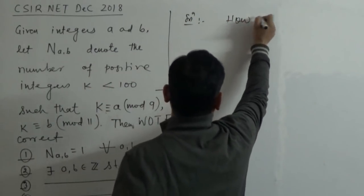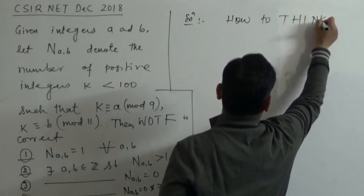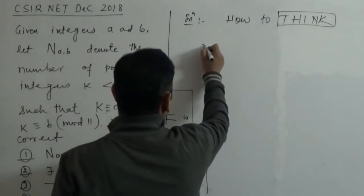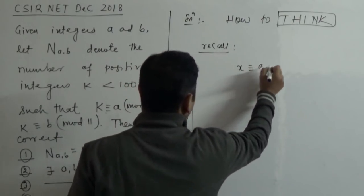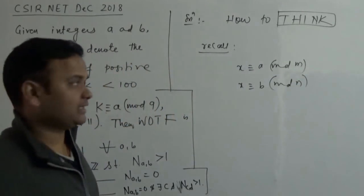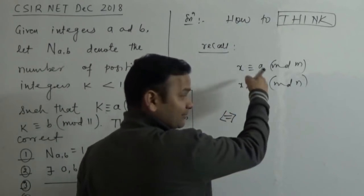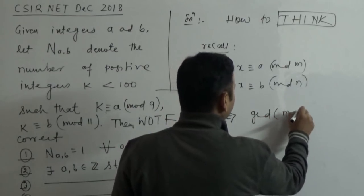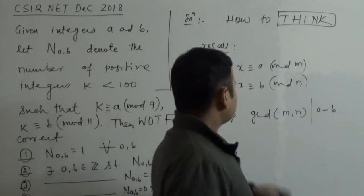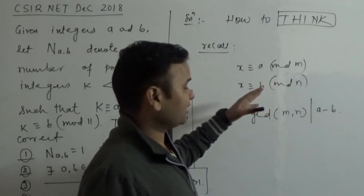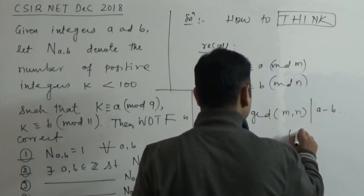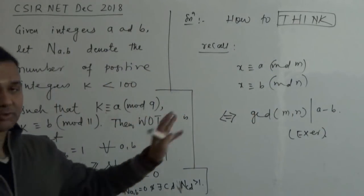So for the solution, let's take the key theory. The system x ≡ A mod M and x ≡ B mod N admits a solution if and only if gcd(M, N) divides A minus B. That is the only concept I am going to use here.